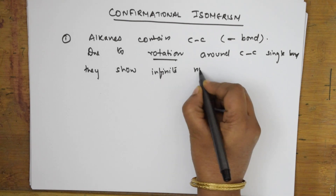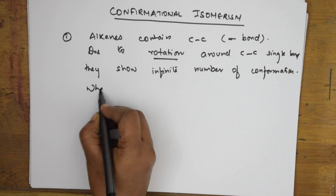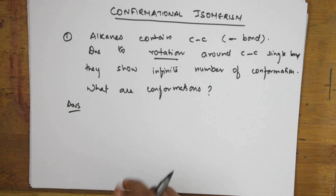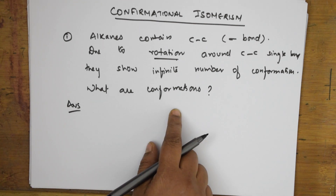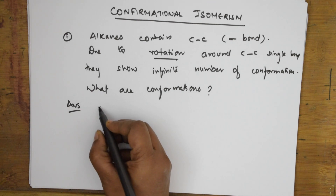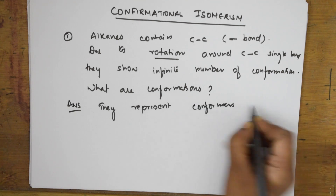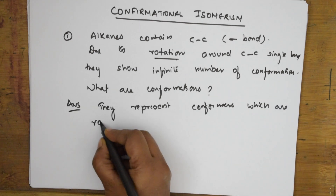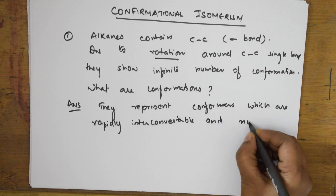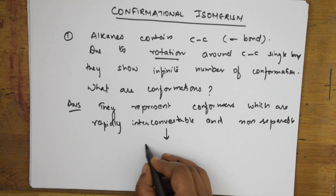Now what are conformations? Let us define them. Conformations represent conformers which are rapidly interconvertible and non-separable. We can interconvert them rapidly but cannot separate them. Such isomers are called conformational isomers.